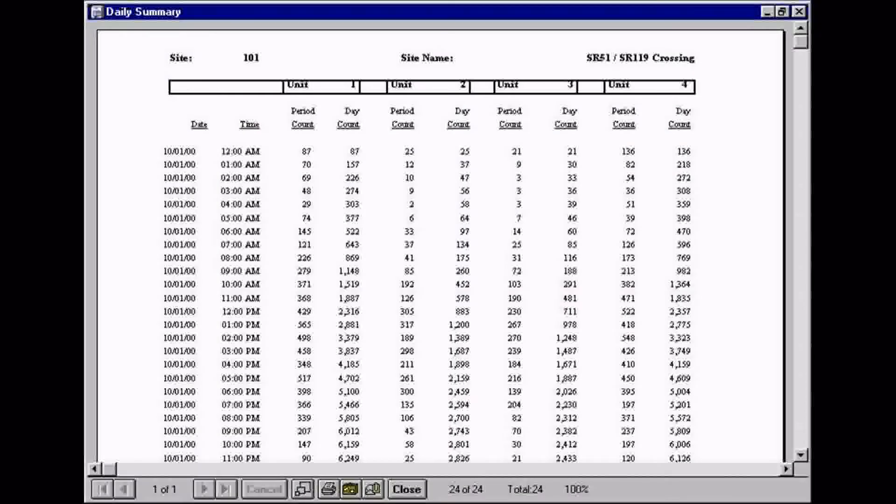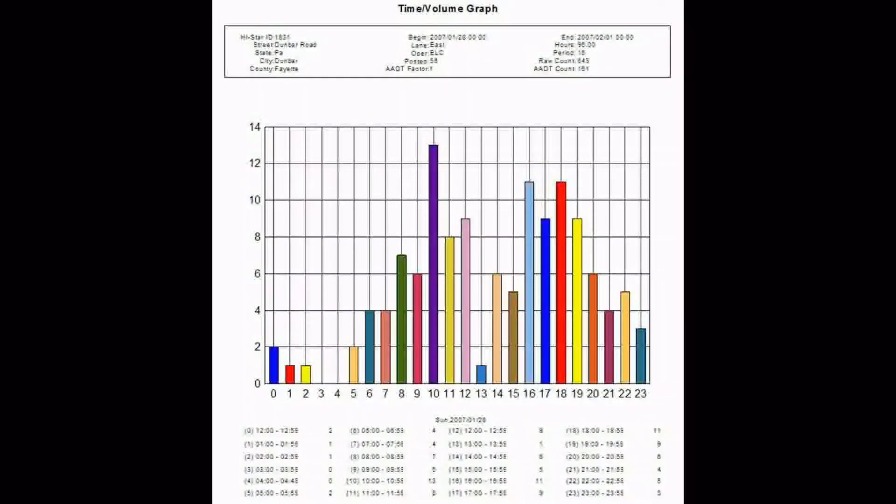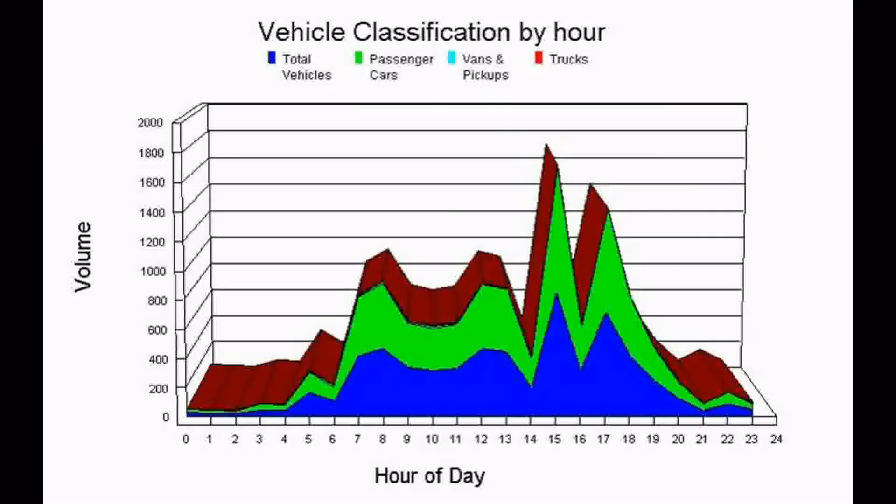At the conclusion of the study the NC200 is interfaced with a computer and the raw data is converted into a readable report by the highway data management software. This software even gives your reports greater depth and meaning by creating charts and graphs of the data collected.